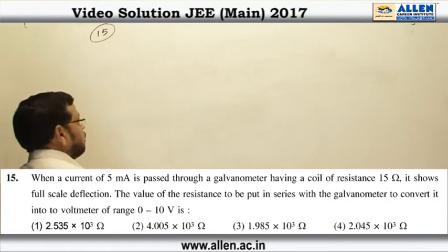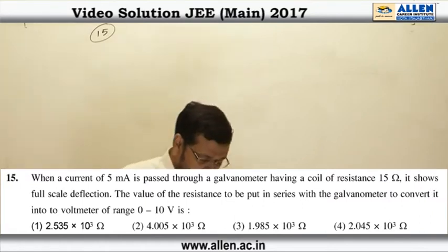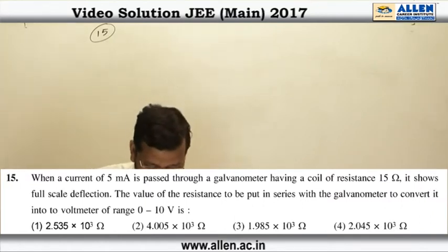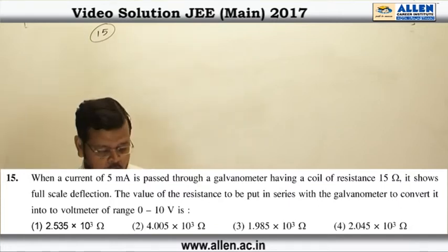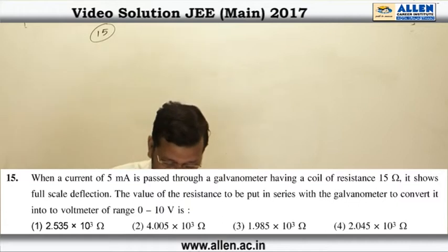Question number 15, this question is based on the principle of conversion of a galvanometer into a voltmeter. It is given that a current of 5 milliampere creates a full scale deflection in a galvanometer.